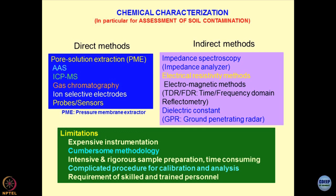Most of these techniques have already been covered in our laboratory and have become routine exercises, shown to work in the field as well as in the laboratory. However, there is a caution that both these methodologies have their limitations. First, these are expensive instrumentation and very cumbersome methodologies, though they appear simple. Even in direct methods, sample preparation is quite cumbersome and expensive. In indirect methods, the gadgets themselves are very expensive. Intensive and rigorous sample preparation is time-consuming, and the calibration and analysis of results is a complicated process. Both techniques require skilled and trained manpower.